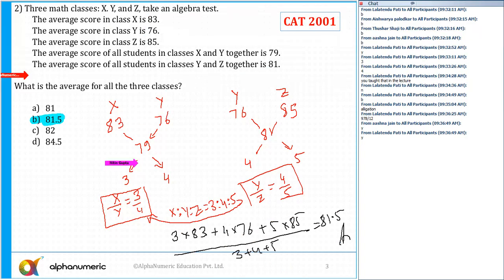You could have found out the averages, the ratios, by making an equation, but making an equation is time consuming. So it is better to use the allegation rule and then combine them. Can I go to the next lesson?